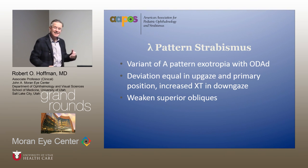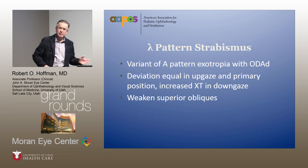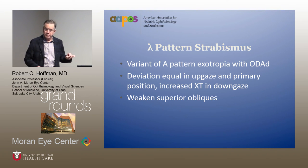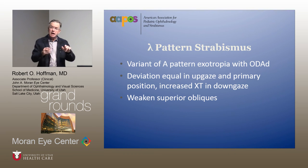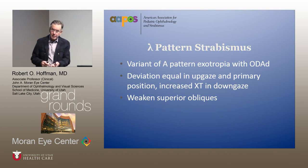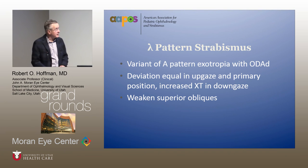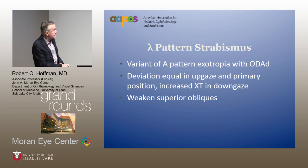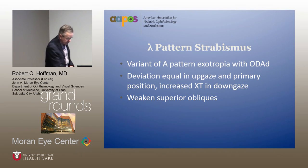Lambda patterns are actually just a variant of A-pattern exotropia — essentially superior oblique overaction. They typically have orthophoria in primary position and up gaze, with large angle exotropia in down gaze. The appropriate course of action is to weaken the superior obliques.